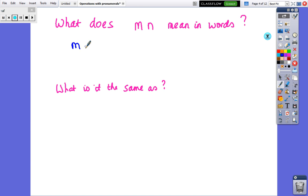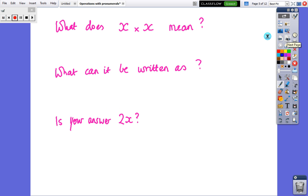So hopefully you might have m lots of n. Look at what that means. For instance, 3 lots of 7, 4 lots of 10. And what's it the same as? It's the same as m times n. So what does x times x mean? What can it be written as? These are the same as 2x. Write down some answers and when you're ready come back and have a look at mine.